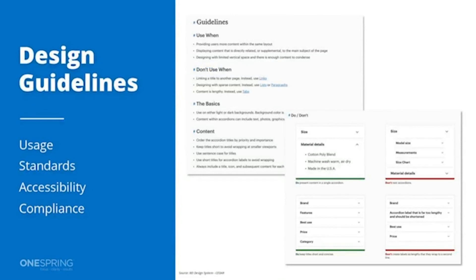Design guidelines are what really clearly separates a style guide or UI kit from a system. Every organization has a varying degree of depth in their guidelines — and I encourage you to start small. At the most basic level it's about usage: rather than just handing somebody a component, it's about telling them how to use it, and equally importantly how not to use it.